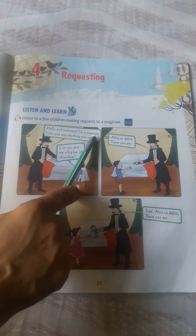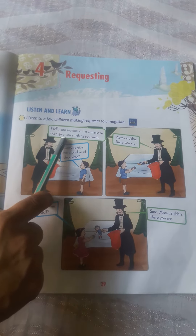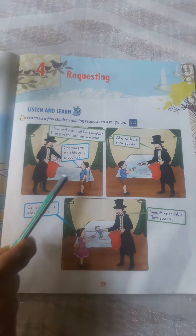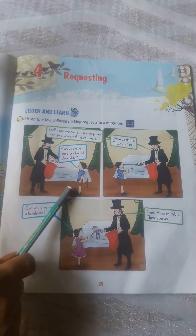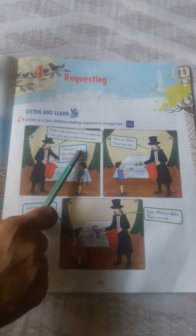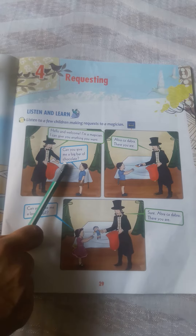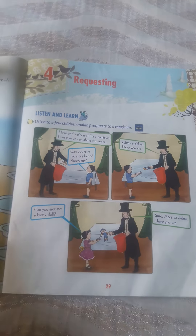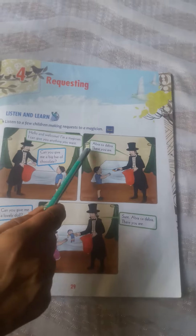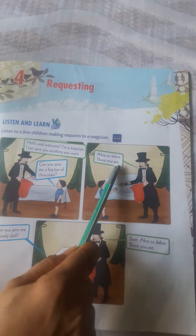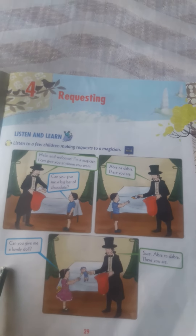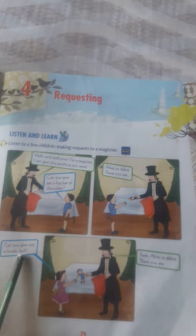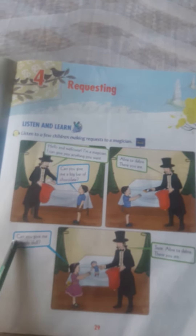Hello and welcome. I am a magician. I can give you anything you want. So this boy says: 'Can you give me a big bar of chocolates?' He uses 'can' here, and abracadabra, there you are. In the next picture: 'Can you give me a lovely doll?' Again this girl uses 'can'.